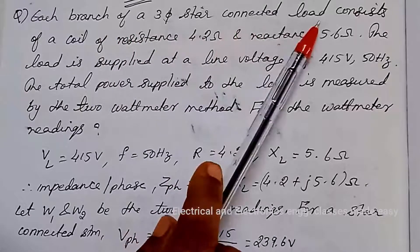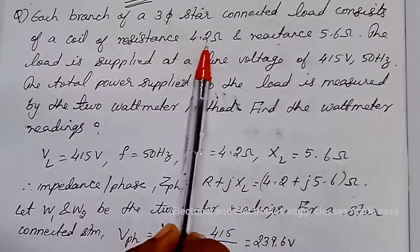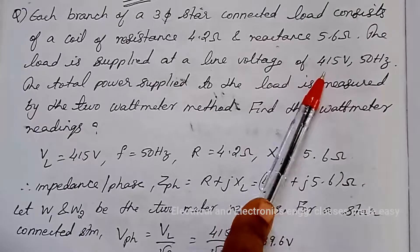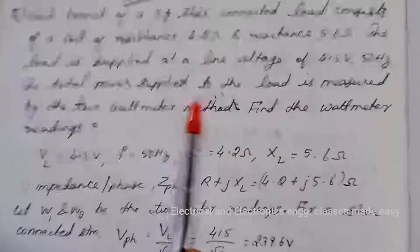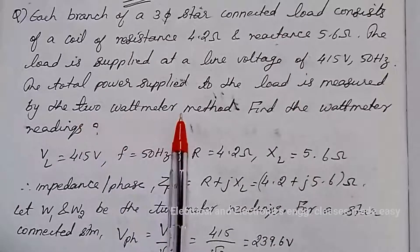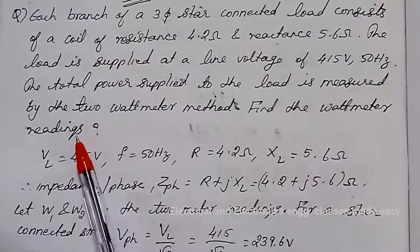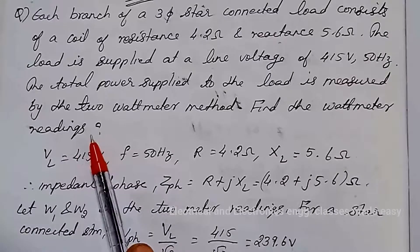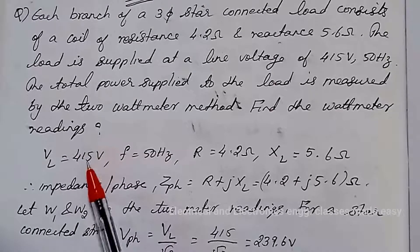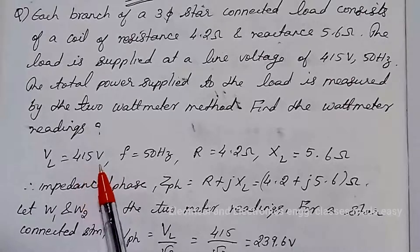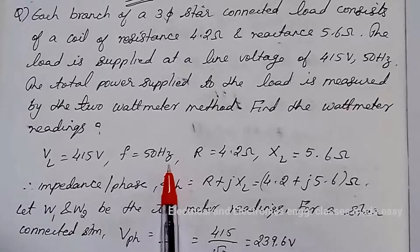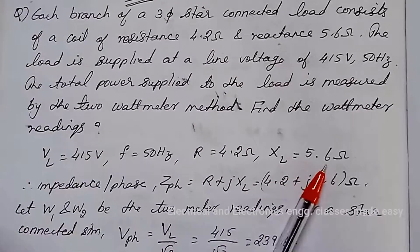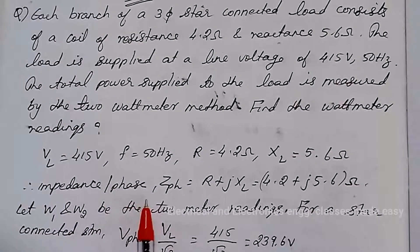Let us do another important problem. Each branch of a three-phase star-connected load consists of a coil of resistance 4.2 ohm and reactance 5.6 ohm. The load is supplied at a line voltage of 415 volt, 50 Hz. The total power supplied to the load is measured by the 2 watt meter method. Find the watt meter readings. The given data are: VL = 415 V, frequency = 50 Hz, resistance = 4.2 Ω, and reactance XL = 5.6 Ω.